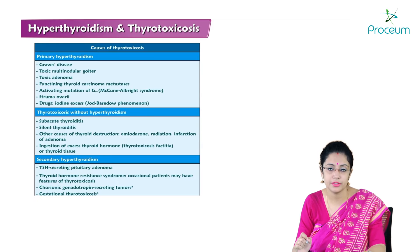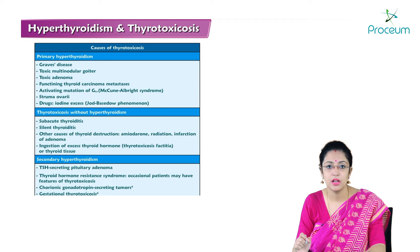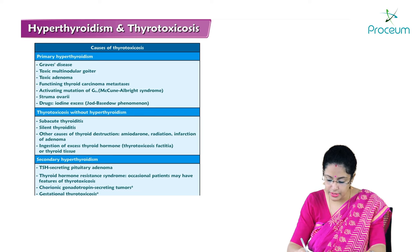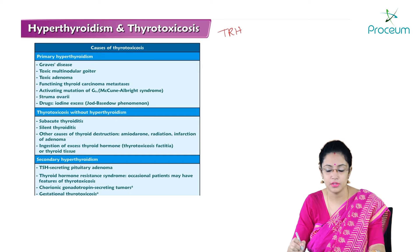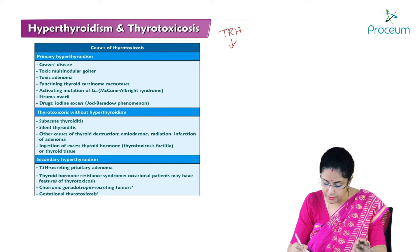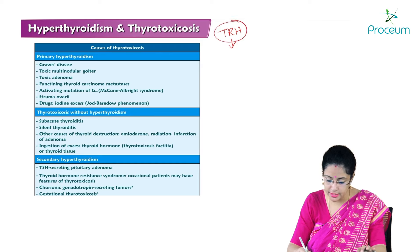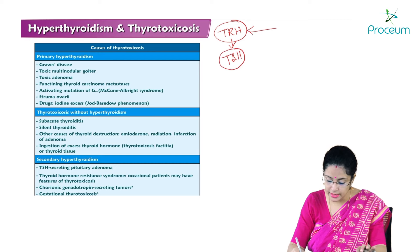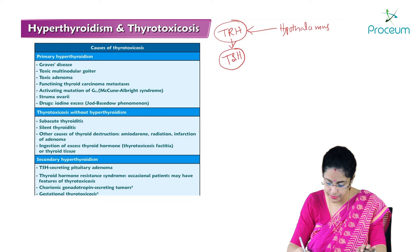What are the causes of hyperthyroidism and thyrotoxicosis? Let's talk a little bit about the control or regulation of thyroid hormone. We know that the hypothalamus will release TRH, that is thyrotropin releasing hormone. This TRH will act on the anterior pituitary, and the anterior pituitary will release TSH, thyroid stimulating hormone. TSH comes from the anterior pituitary.